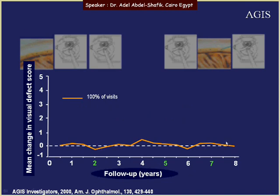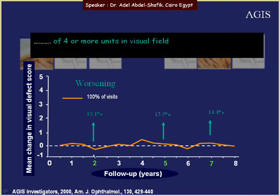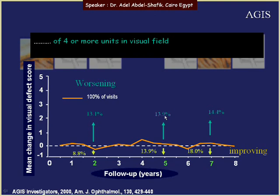Even in the stable group, after two years 13.1% worsened by four units on the score and 8.8% improved. After five years, 13.9% worsened and 13.9% improved. After seven years, 14.4% worsened and 18% improved. So on average the group remains stable, but individual variation exists. This highlights the important difference between mean outcomes and individual patient trajectories.